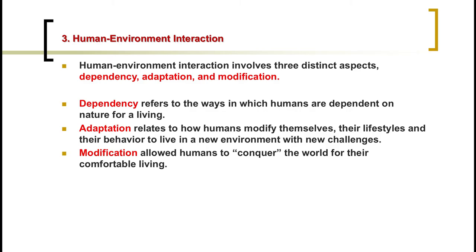The third theme is human-environmental interactions. Human beings are always dependent on the environment. In order to live, humans interact with spatial features daily. When human beings interact with nature, three fundamental aspects may happen: dependency, adaptation, and modification. Dependency is the way human beings depend on nature in order to live. Adaptation is the way human beings modify themselves towards a changed environment. Modification is the way humans modify the normal environment towards their own needs. There is a difference between modification and adaptation that must be understood.